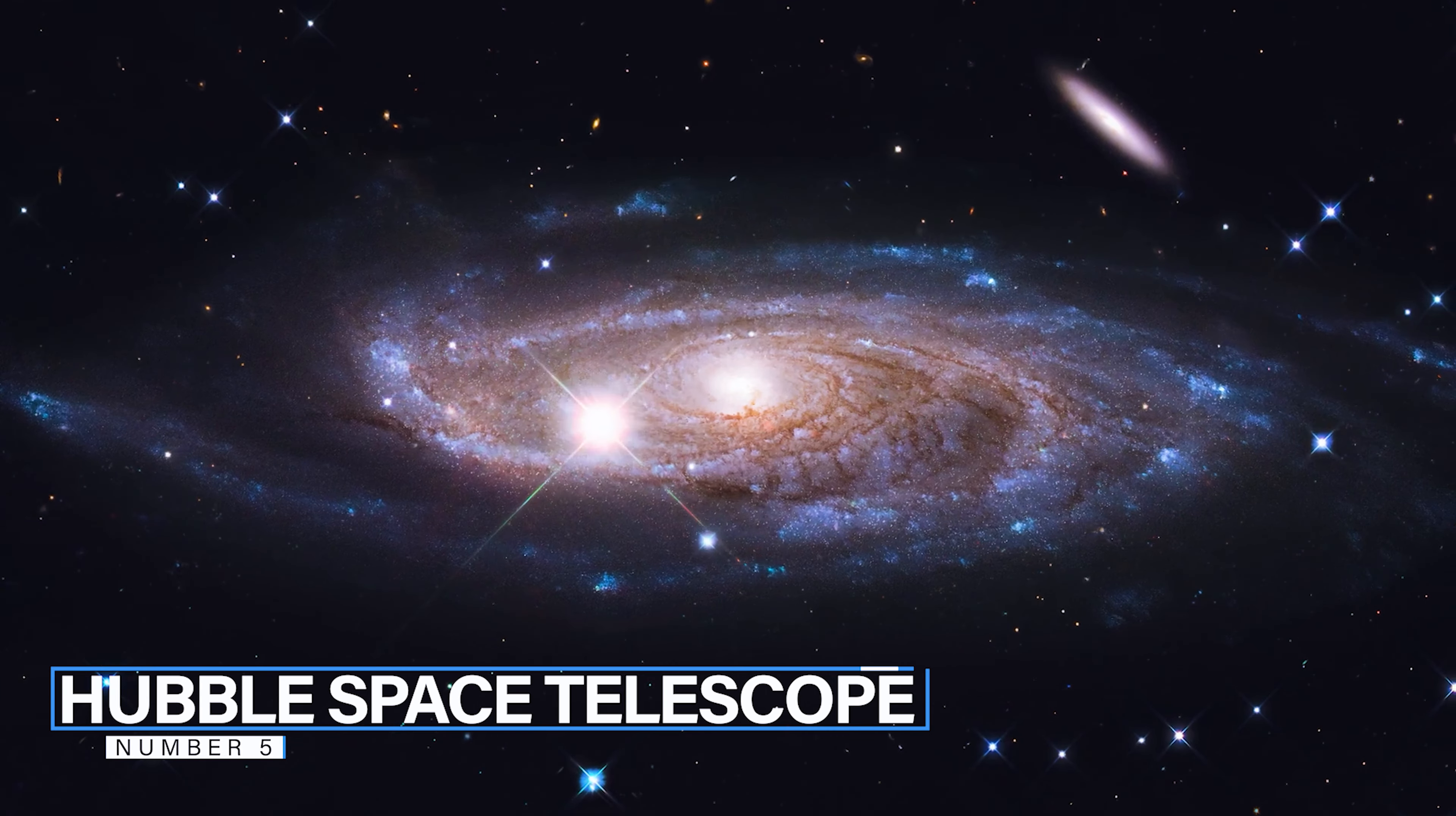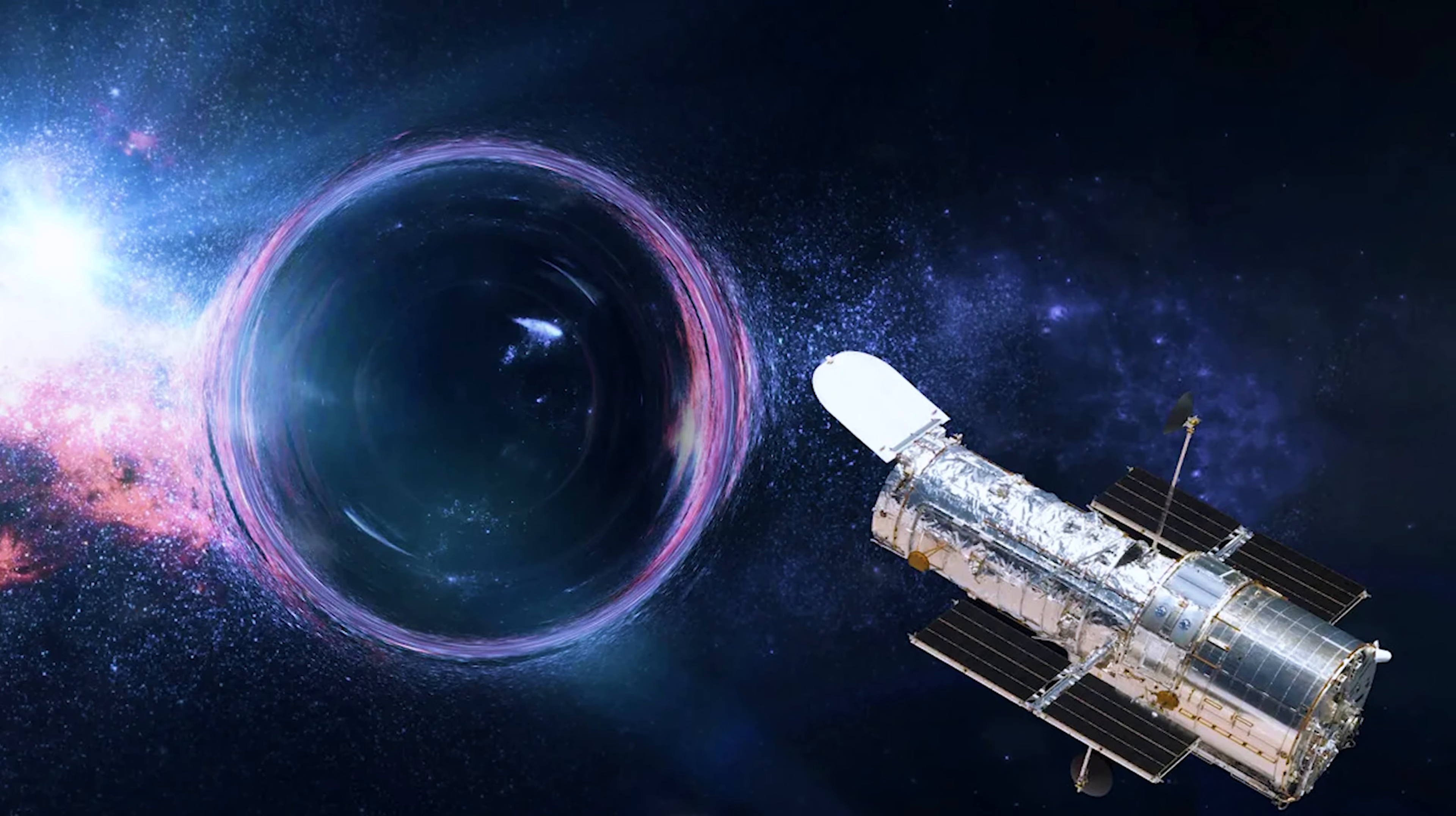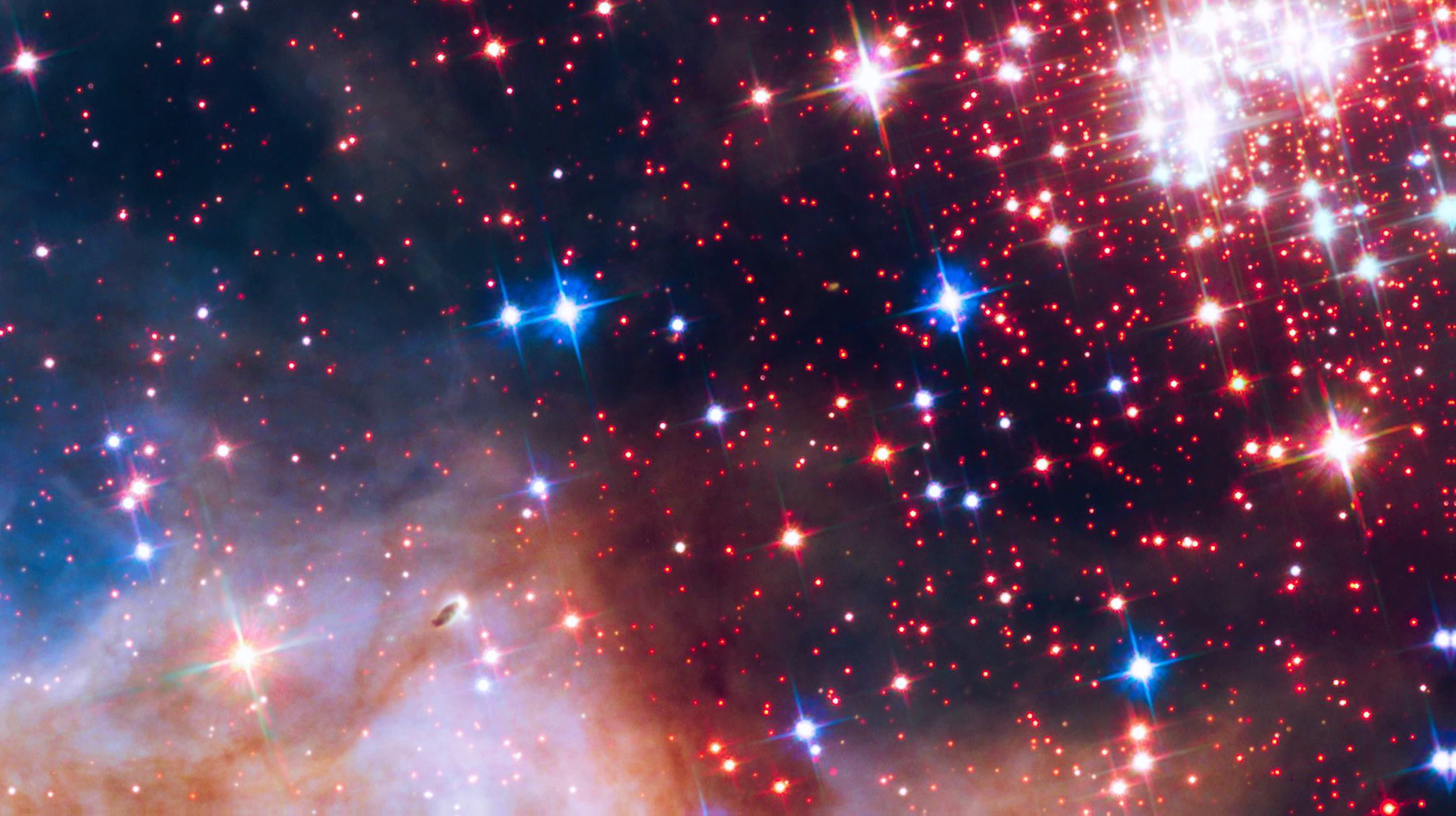Number 5, we have the Hubble Space Telescope, launched in 1990. The Hubble Space Telescope, also called HST or just Hubble, is a telescope in space that was put into low Earth orbit in 1990 and is still working. It wasn't the first space telescope, but it is one of the biggest and most useful.